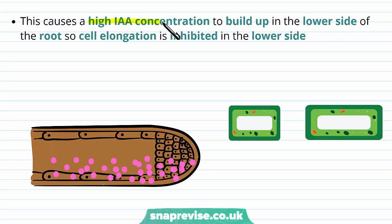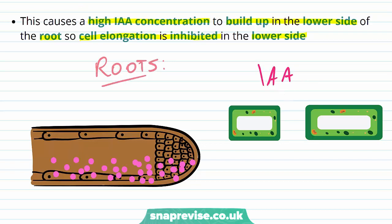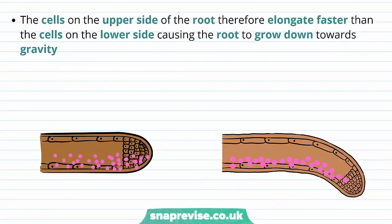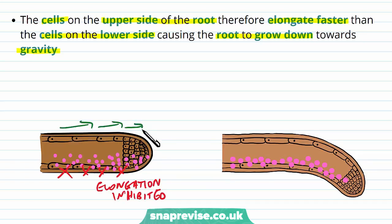With a high IAA concentration built up on the lower side of the root, cell elongation becomes inhibited on the lower side — remember, at the roots, IAA has the effect of inhibiting cell elongation. So the cells can't elongate on this side. Because of this, the cells on the upper side of the root elongate faster than the cells on the lower side, causing the root to grow down towards gravity — the lower side cells can't elongate, while the upper side cells push the root downwards.